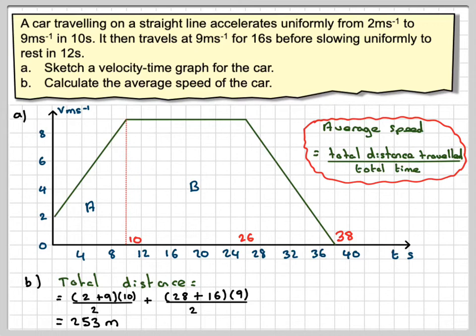And that will give me 253 metres. So the average speed will be the total distance, which is 253, divided by the total time, which is 38, giving me a speed of 6.657, which is 6.66 metres per second.